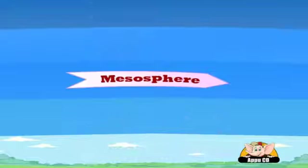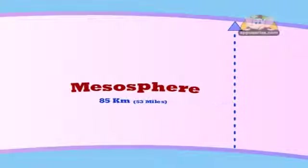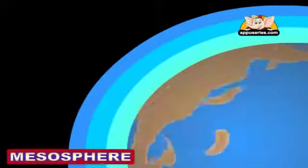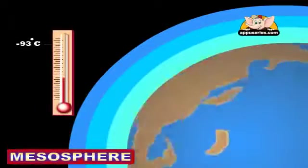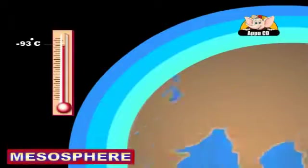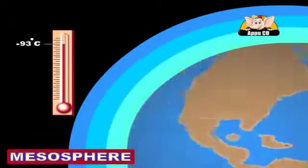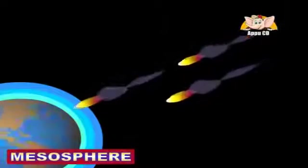The mesosphere starts just above the stratosphere and extends to 85 km which is 53 miles high. In this region, the temperatures again fall as low as minus 93 degrees Celsius as you increase in altitude. The chemicals are in an excited state as they absorb energy from the sun. This is also where most meteors burn up when entering the atmosphere.